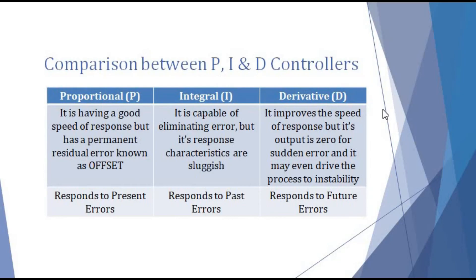The derivative controller improves the speed of response. The problem of the I-controller was eliminated through the derivative controller. However, the output is zero for a sudden error, and it may drive the process to instability. For sudden or step-change errors, the derivative controller gives no output — this is a disadvantage. Additionally, the derivative controller does not care about the stability of the system and may even drive the process to instability, which is a very big issue.